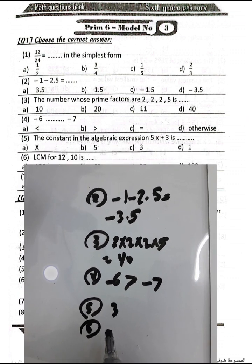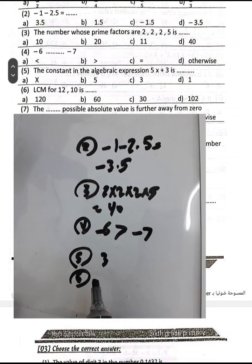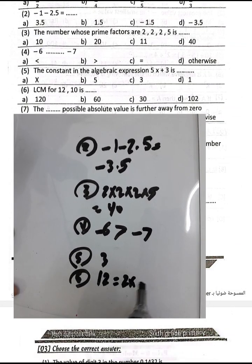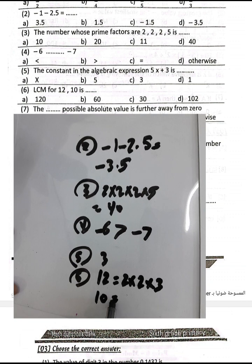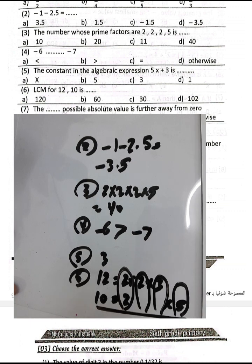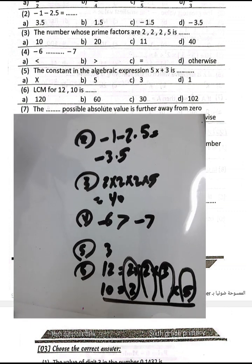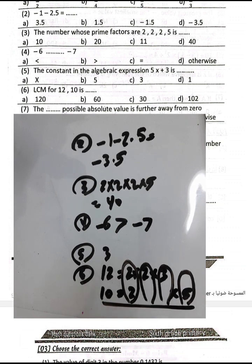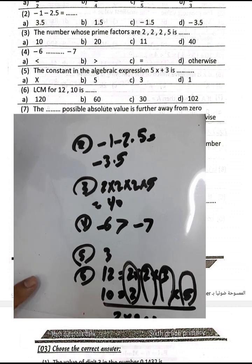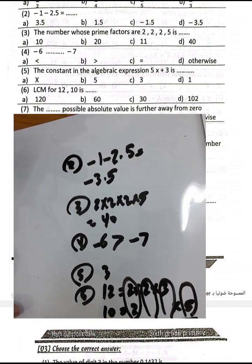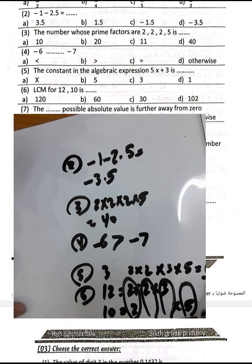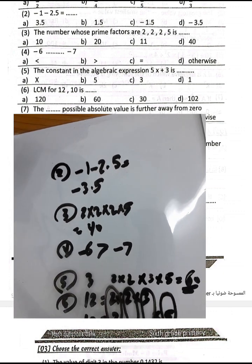Question 6: Finding the least common multiple between 12 and 10. 12 equals 2 times 6, and 6 equals 2 times 3. 10 equals 2 times 5. The LCM is found by multiplying 2 times 2 times 3 times 5. 2 times 2 equals 4, times 3 is 12, and 12 times 5 equals 60. So the least common multiple is 60.